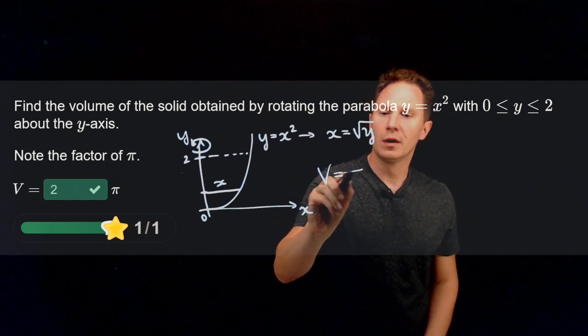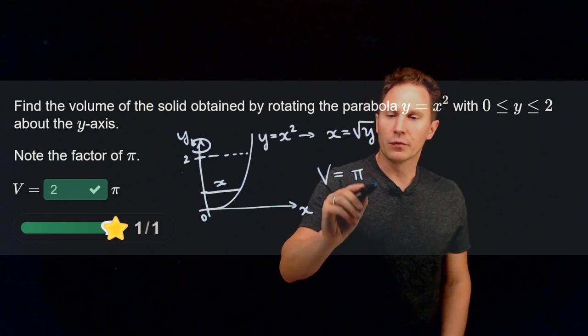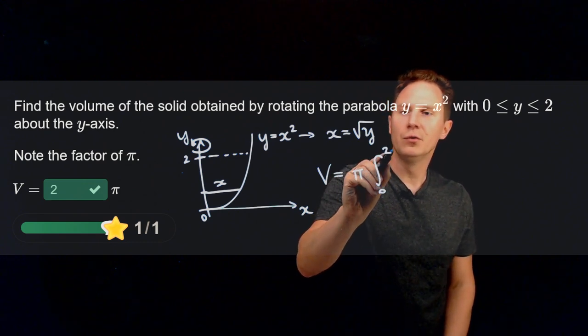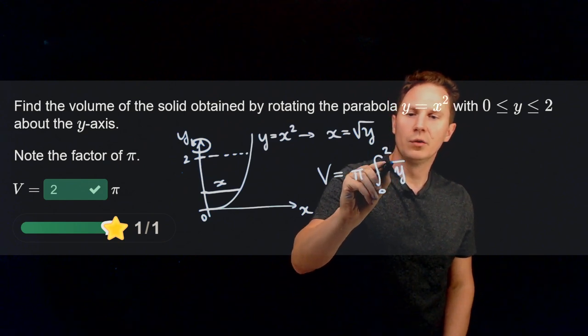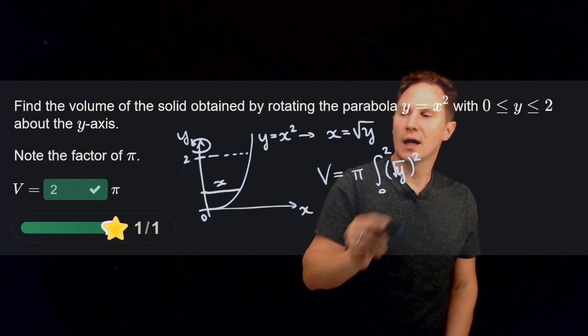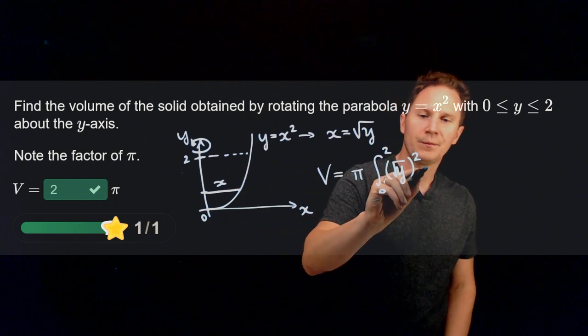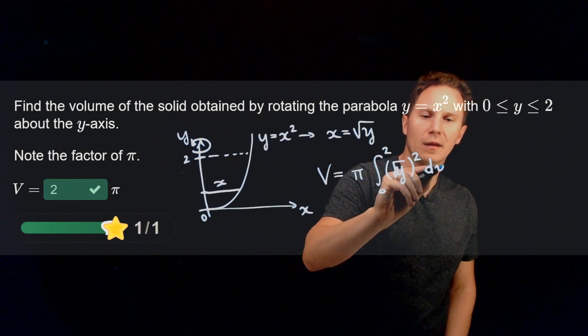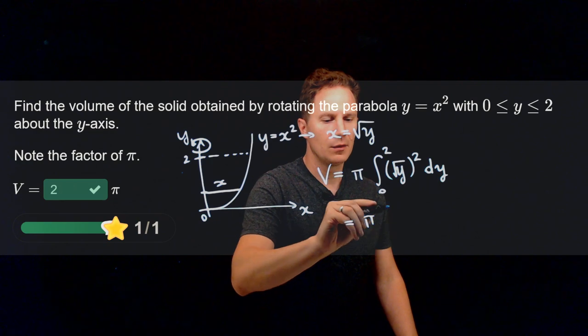Therefore, to get the volume, we need to take the integral formula, that is pi times the integral from 0 to 2, the radius squared, so root y squared times delta y, as in the approximation, but in the limit that's dy.